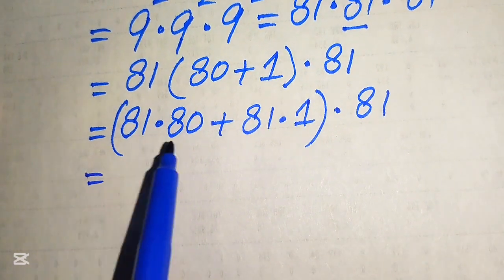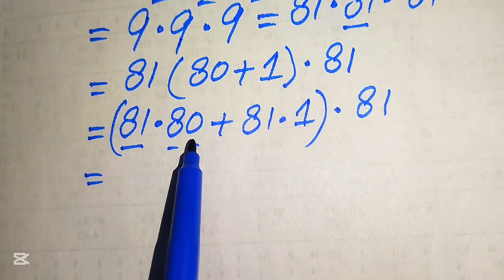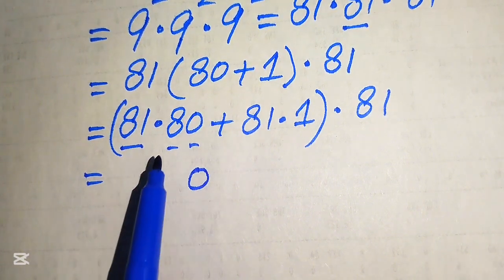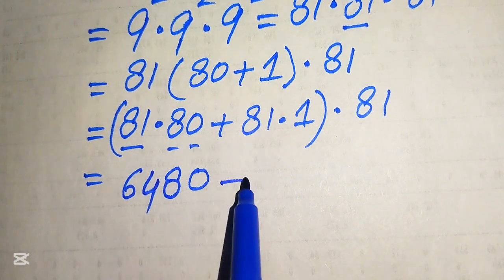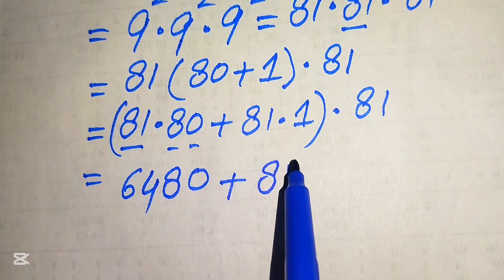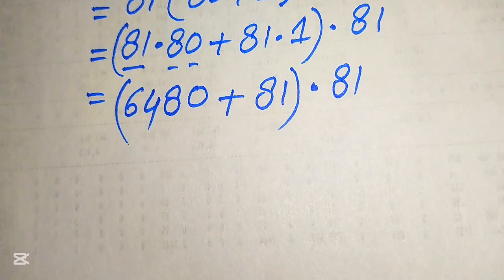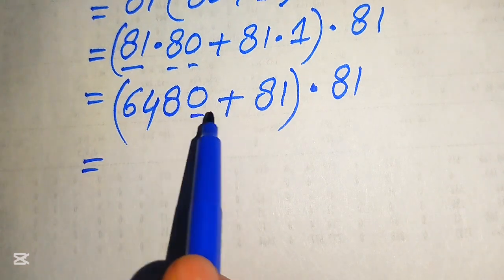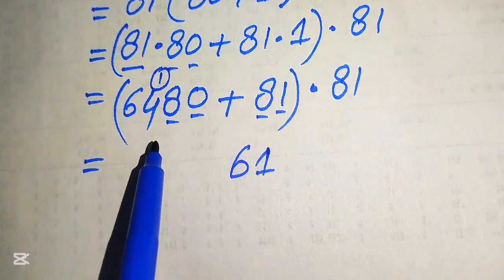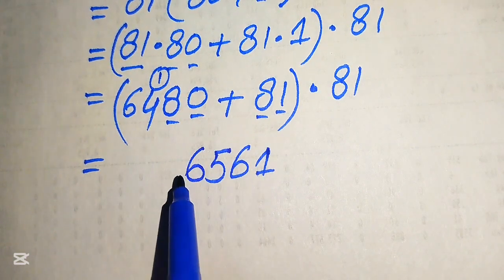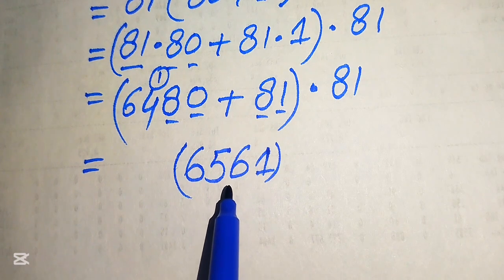Multiplying: 0 times 81 is 0, and 8 times 81 gives 8×8=64, plus 81 times 1 equals 81. Adding these values: 0 plus 1 is 1, 8 plus 8 becomes 16 — write 6 carry 1, and 4 plus 1 becomes 5, giving us 6. So the result of this summation is 6561.